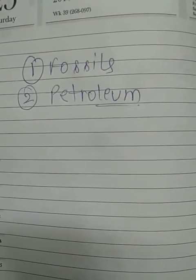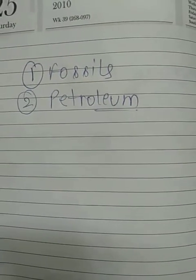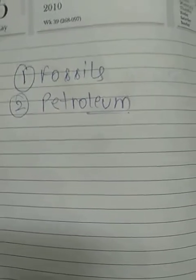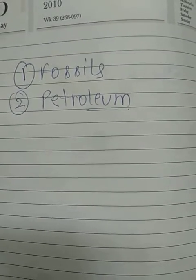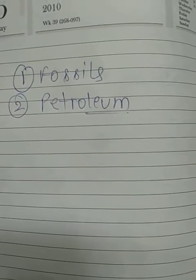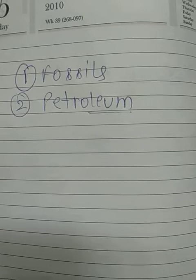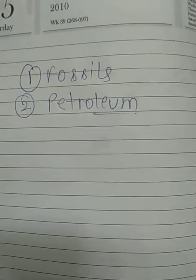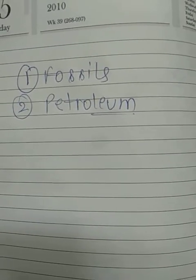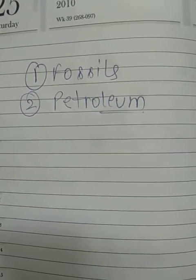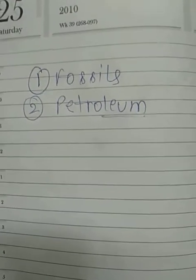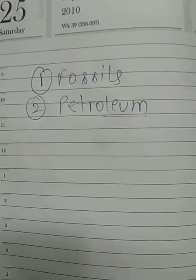Fossils are the dead remains of plants and animals. When plants and animals died millions of years ago, they were converted into fossils. Petroleum is also known as crude oil. It is a natural resource also known as black gold — 'black' because when it is extracted from rock it is black in color, and 'gold' because of its valuable properties.